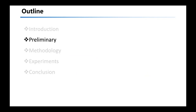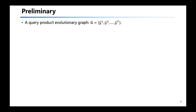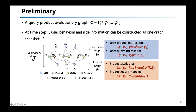Next I will introduce the preliminaries and formally define our problem. The user behaviors on e-commerce can be organized as an evolutionary graph, which is a sequence of graph snapshot shots collected from each time step. At each time step, the graph snapshot consists of two parts: first, an interaction graph describing interactions between each pair of user-product and user-query — for example, a user purchasing a product or typing a search query; and second, an attribute graph describing product attributes and the mapping information between each pair of product and query given by the search engine.